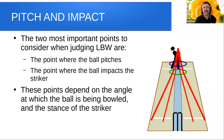Let's look at the two most important points to consider when judging an LBW decision. Number one is the point where the ball pitches — where it lands on the surface of the wicket — and point number two, the point where the ball impacts the striker. Your view of these points may depend on the angle at which the ball is being bowled and the stance of the striker.